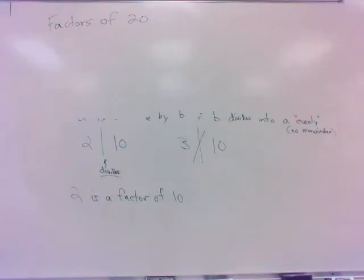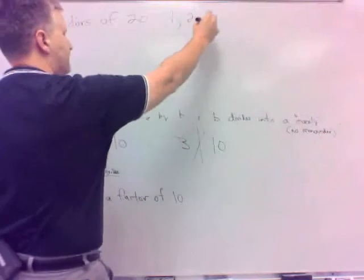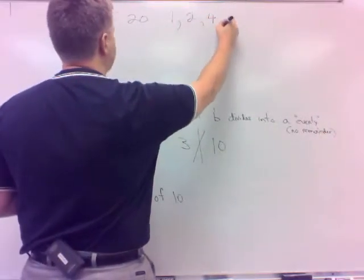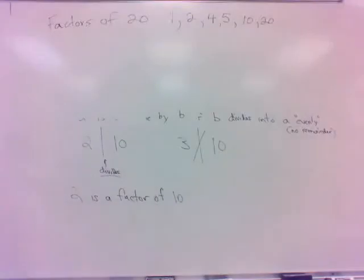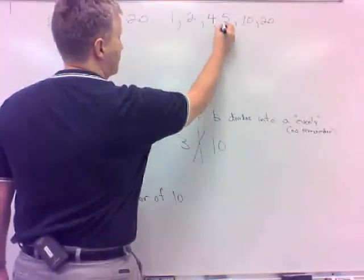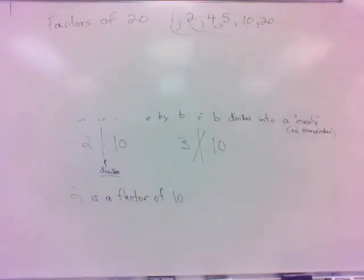Let's list out all the factors of 20. Is 1 a factor of 20? Yes — 1 is a factor of every number. 2 is a factor. 3? No. 4? Yes. And then 5, 10, and 20. Notice: 4 goes with 5, 2 with 10, and 1 with 20 — that's how I made that list.